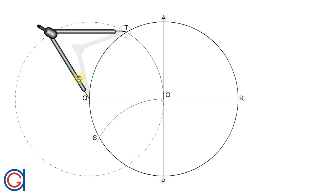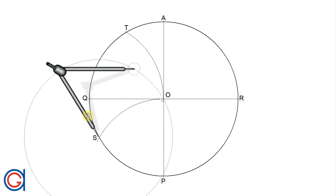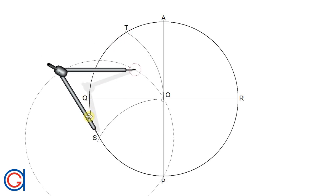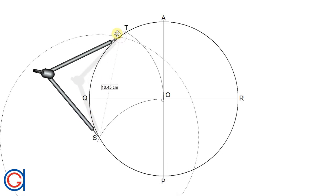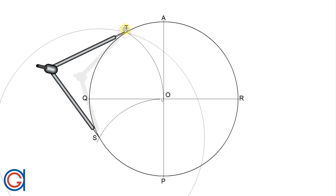Now setting our compass on the point S and with a new radius ST, we are going to describe an arc to the right until it cuts the vertical diameter at a new point which we will call point U.